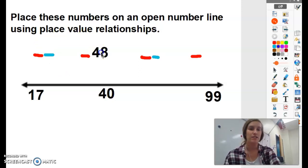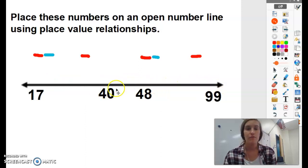Now I want you to watch where I place 48. I'm going to put it kind of next to the number 40. Because if I'm looking at the distance, there's a lot of numbers between 17 and 40. And there's a lot of numbers between 48 and 99. But 40 and 48, those numbers are both within the 40s, so they're close to one another. So I'm going to place them right here, okay?